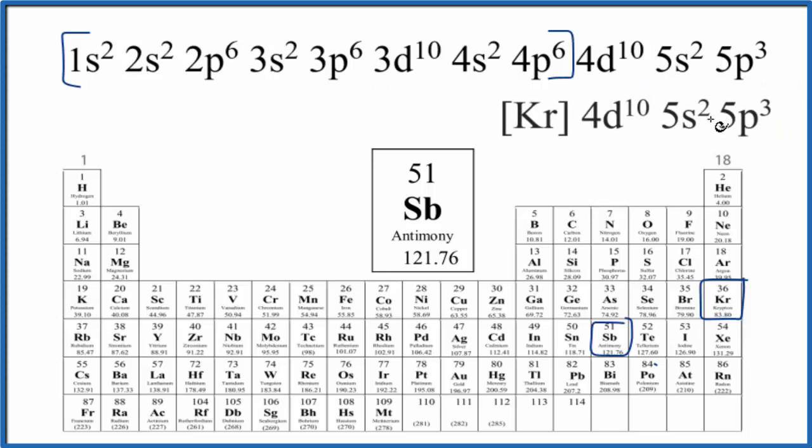Here's the condensed electron configuration for Sb, for antimony. There are two ways that we can figure out how to write this.